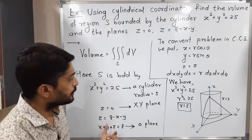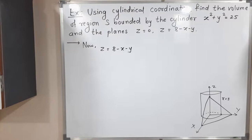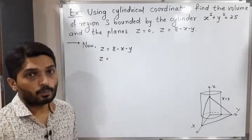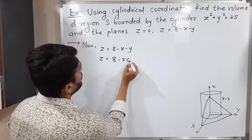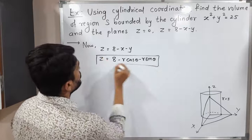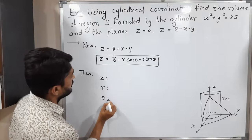Now let us convert the equation of the plane to cylindrical coordinates. We have z = 8 − x − y, substituting x = r cosθ and y = r sinθ gives z = 8 − r cosθ − r sinθ. Now let us find the limits — first for z, then r, then θ.